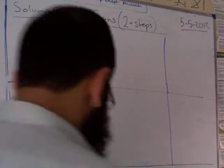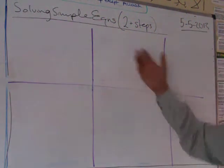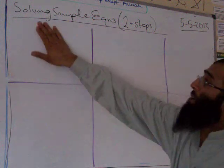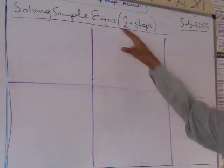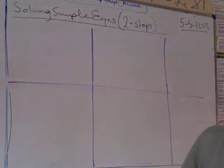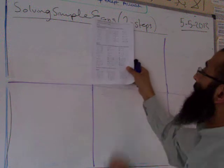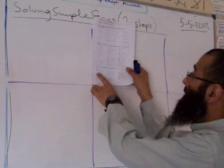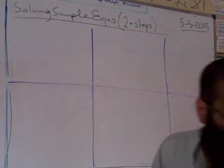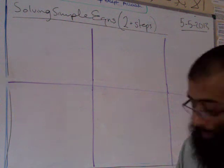Welcome back to our second part of this video. Now we're going to be looking at solving simple equations with two and more than two steps. On our worksheet we're going to be starting at part six, moving onwards. Let's look at question number one: 2x plus 4 equals 10.